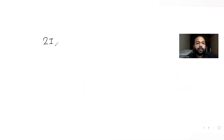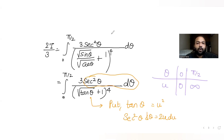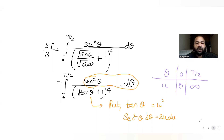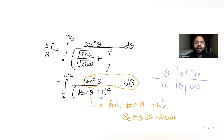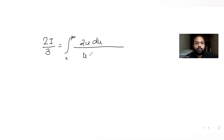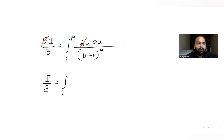The new integral becomes 2I/3 equal to the integral from 0 to infinity. The sec²θ dθ is replaced by 2u du, and √(tan θ) = √(u²) = u, so the denominator becomes (u + 1)^4. After cancelling the 3 we get I/3 equal to the integral from 0 to infinity of u du upon (u+1)^4.